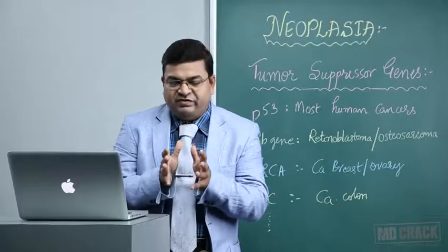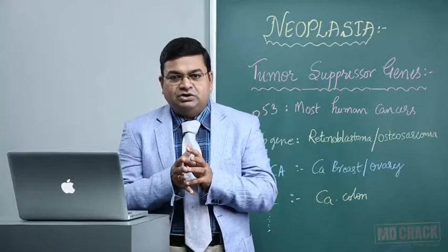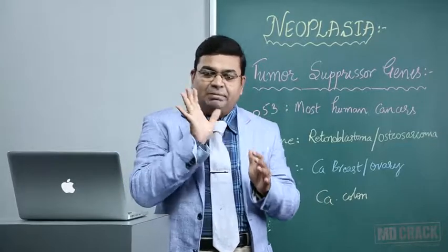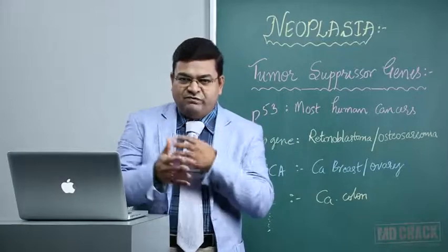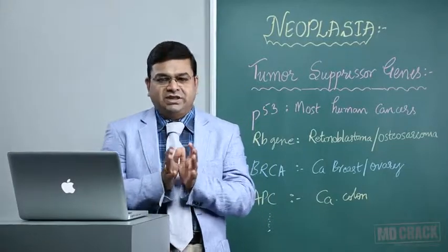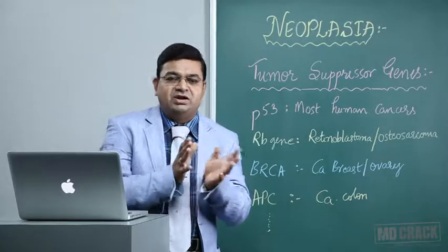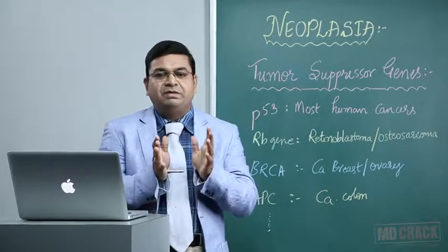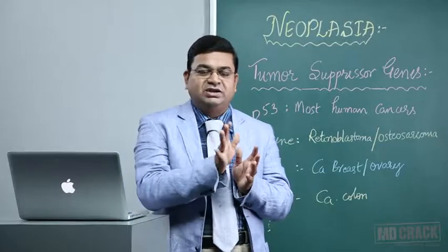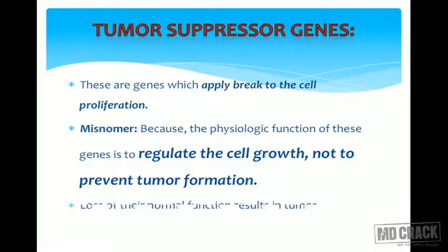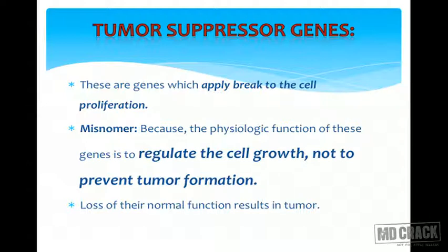Whenever there is a defect, they sense that particular defect in the cell cycle and apply a brake that does not allow the cell to progress further. They give time for DNA to get repaired. If the repair is not done properly, they allow the cell to die by apoptosis. So remember, tumor suppressor genes don't suppress tumor formation as such — it means that if they do not function properly, loss of their normal function results in the evolution of a tumor.